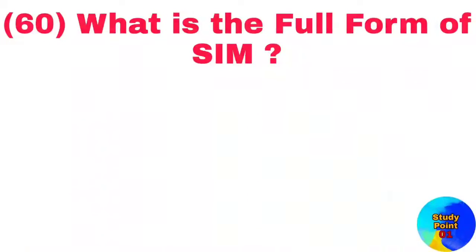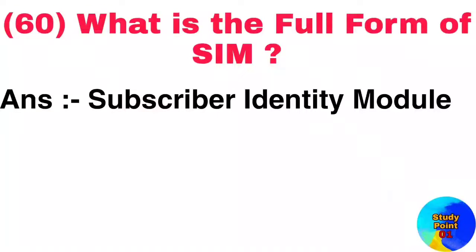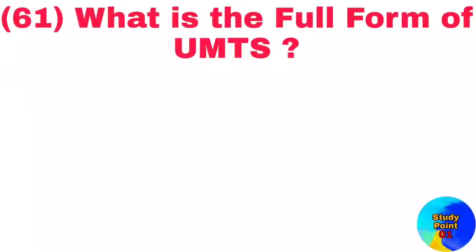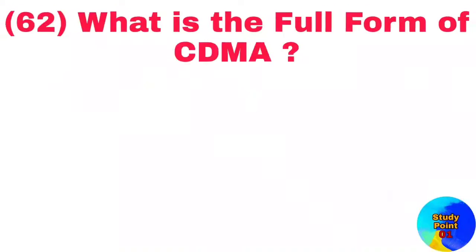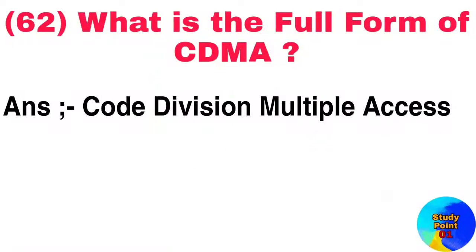Question number 60: What is the full form of SIM? Answer: Subscriber identity module. Question number 61: What is the full form of UMTS? Answer: Universal mobile telecommunication system. Question number 62: What is the full form of CDMA? Answer: Code division multiple access.